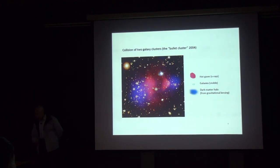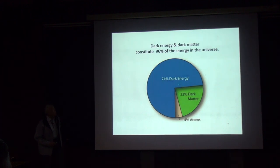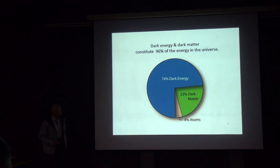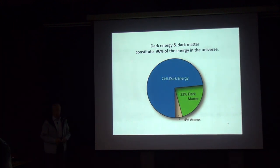This is called the bullet cluster; it was observed in 2004. Putting it all together, dark energy is 74% of the energy of the universe, dark matter is 22%, and all we see — the visible atoms — is only 4%. The rest is dark energy and dark matter. Overwhelming, and we don't know what they are. That is the greatest puzzle of all time.